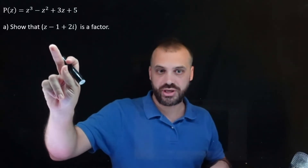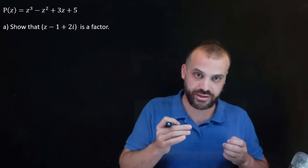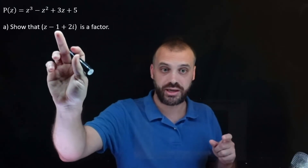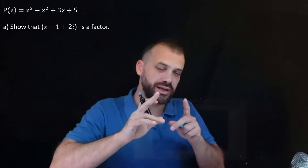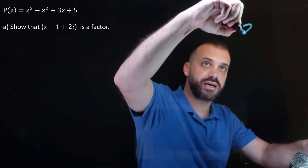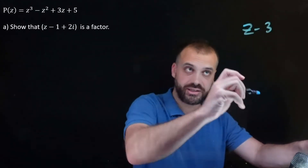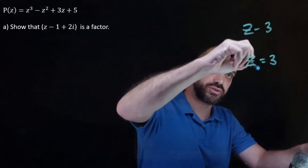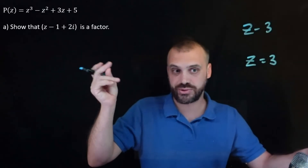Part A says show that z minus 1 plus 2i is a factor. Students get really confused with things like this where there's a complex number in the factor. So let's go back to factors that don't have complex numbers. Say z minus 3 is a factor — if z minus 3 is a factor, that means z equals 3 is a solution when P(z) equals 0.